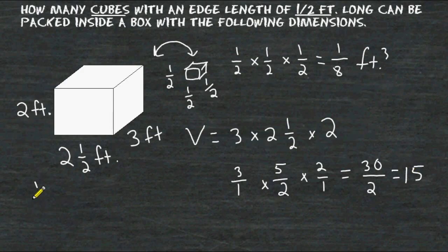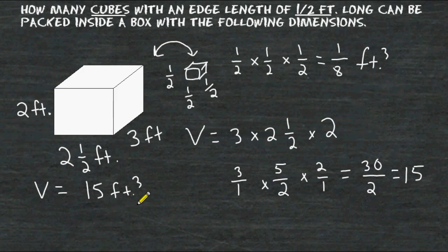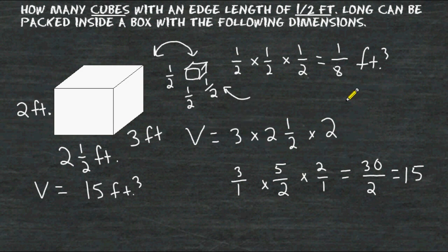So the volume of the shown box is equal to fifteen cubic feet. But we should understand that fifteen cubic feet represents how many cubes with an edge length of one whole foot we can pack inside the box. Remember, it would take eight of these small cubes to fit inside one whole cubic foot.